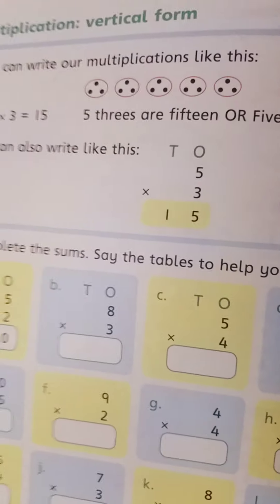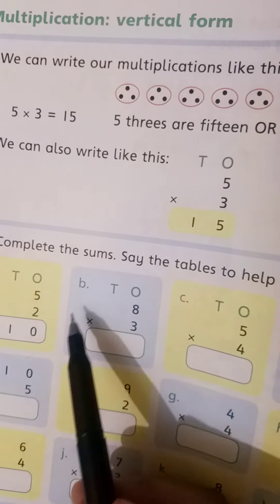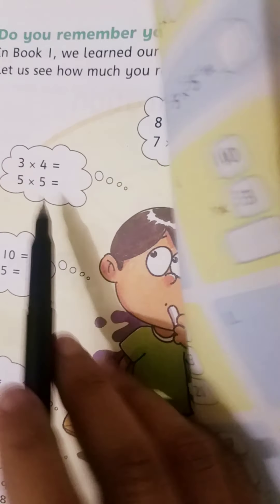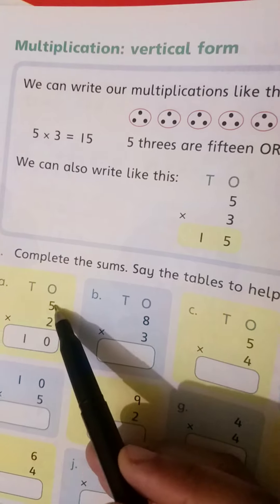Page number 56 is multiplication vertical form. In the vertical form, you have the same question, 3 by 4, 4 by 4. You write it up or down vertically and multiply using tables.